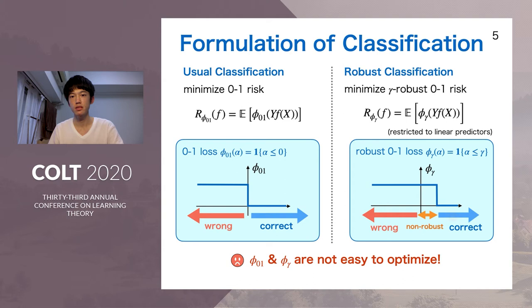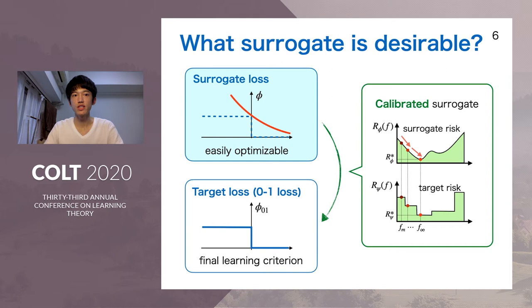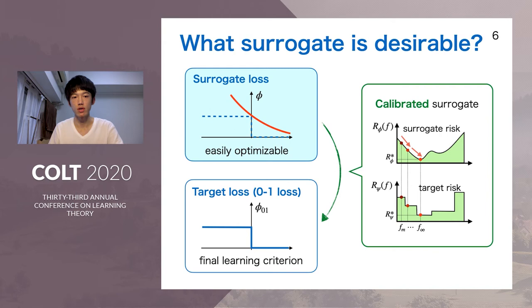The problem is that both zero-one loss and gamma-robust zero-one loss are not easy to optimize because they are discontinuous and have no gradient. The usual strategy is to use surrogate loss functions that are easier to optimize, such as logistic loss or hinge loss, which are convex or smooth counterparts of zero-one loss. However, since our final learning objective is still the target loss, we have to bridge the gap between the target loss and the surrogate loss.